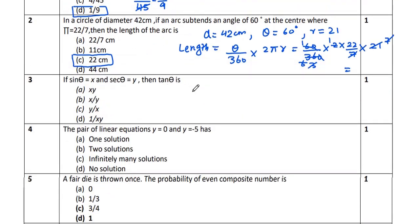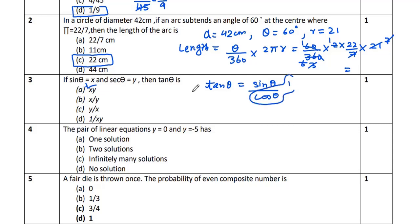Question 3: Given sin θ = x and sec θ = y, find tan θ. We know tan θ = sin θ × cos θ, but we don't have cos θ directly. However, 1/cos θ = sec θ, so tan θ = sin θ × (1/cos θ) = sin θ × sec θ = x × y. Therefore tan θ = xy, which is option A.